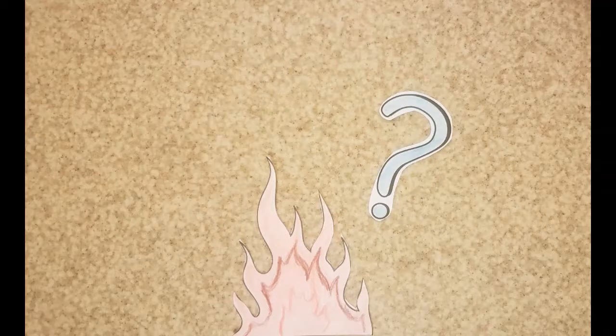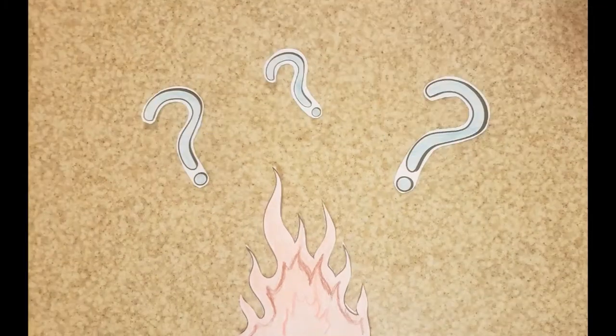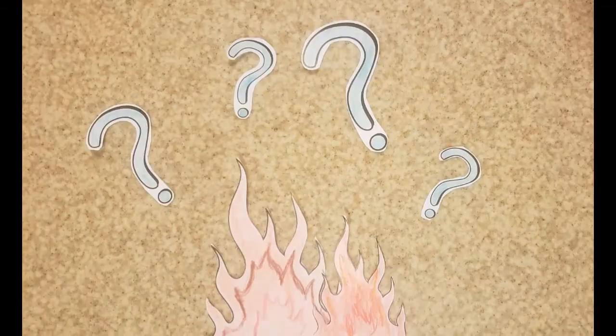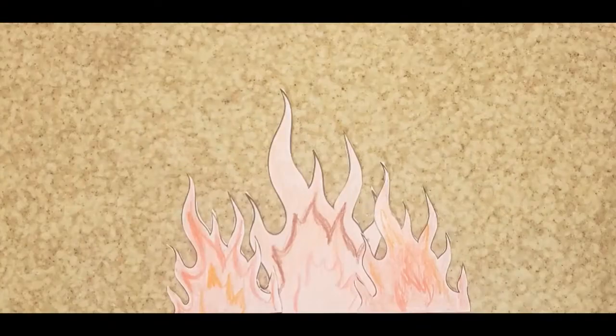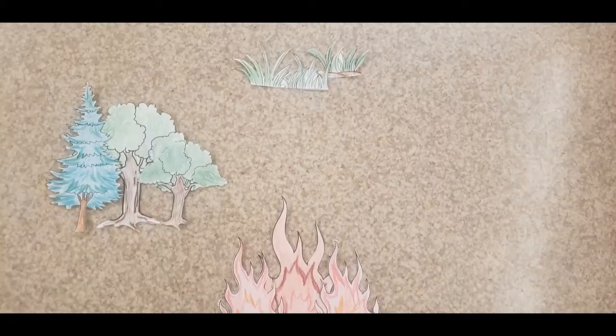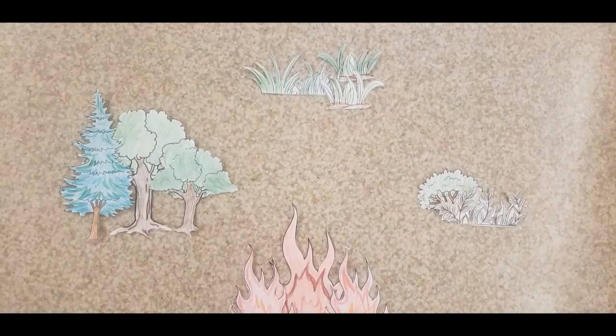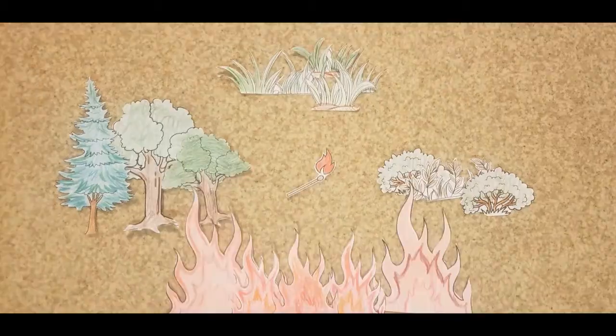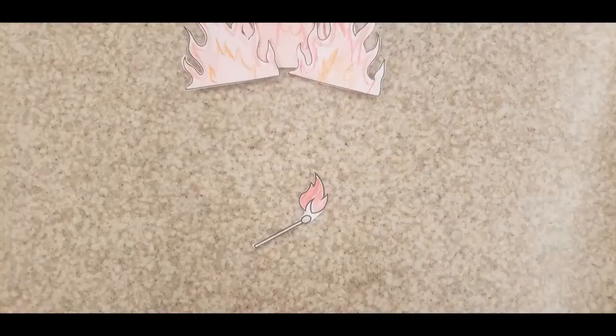What are wildfires and how do they spread? Wildfires are uncontrolled fires that occur in forests, grasslands, and brushlands that spread quickly and can destroy the surrounding environment.